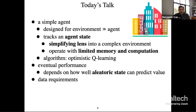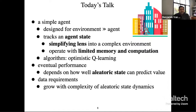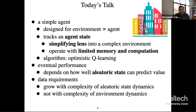The particular algorithm we're going to use is optimistic Q-learning. What we'll establish is that the eventual performance can be bounded based on how well aleatoric state can predict value. Aleatoric state is part of agent state — it's something the agent keeps track of to represent what it thinks its situation in the environment is. The data requirements grow with the complexity of the aleatoric state dynamics, but not with any other notion of complexity having to do with the environment dynamics. Agent state and aleatoric state are things in the mind of the agent — we want the agent to learn to behave effectively in time driven by that complexity, not the complexity of the true environment.